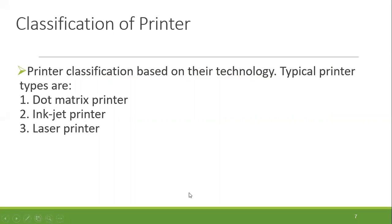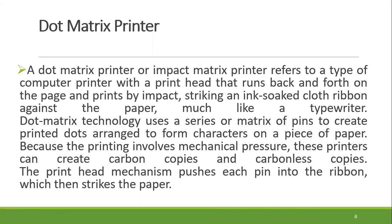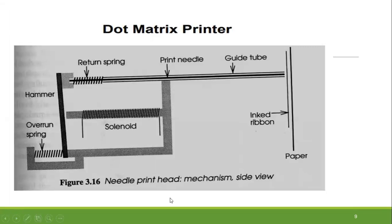Which printer and which technology do you use? You can use the dot matrix printer, the inkjet printer, or the laser printer. In terms of the laser printer, we use a toner. In the diagram, we have a paper in the middle. We can use the paper on top, and we have a ribbon on top of the paper. Then we have a needle.